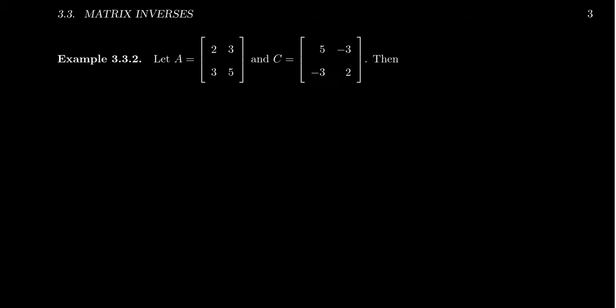Consider the matrices A, which is 2 by 2: 2, 3, 3, 5. And C is also a 2 by 2 matrix: 5, -3, -3, 2. Now, I want to mention that we defined non-singular matrices only for square matrices. If you're not square, then you can't be non-singular. So a non-square matrix is automatically going to be singular. Now, in this situation, we have two square matrices. What happens when we multiply them together? If we take A times C...